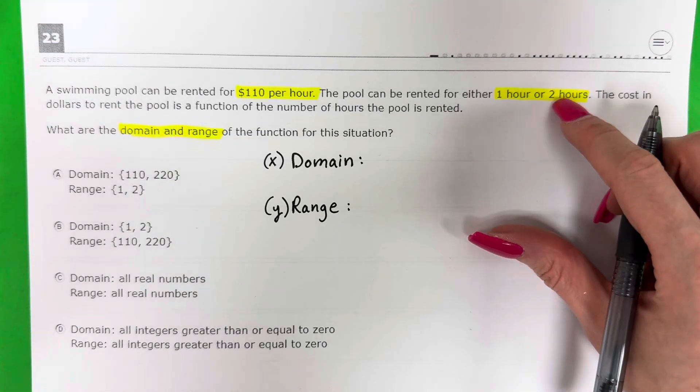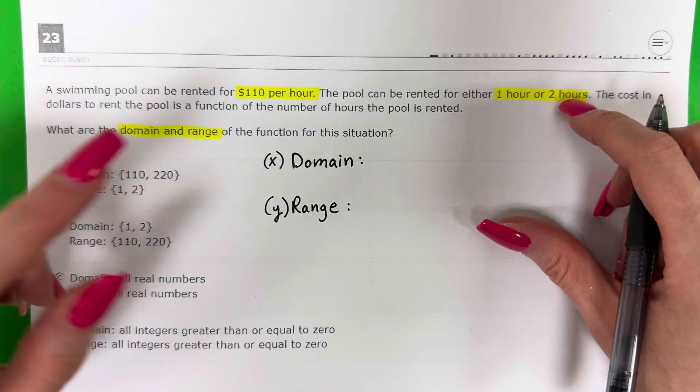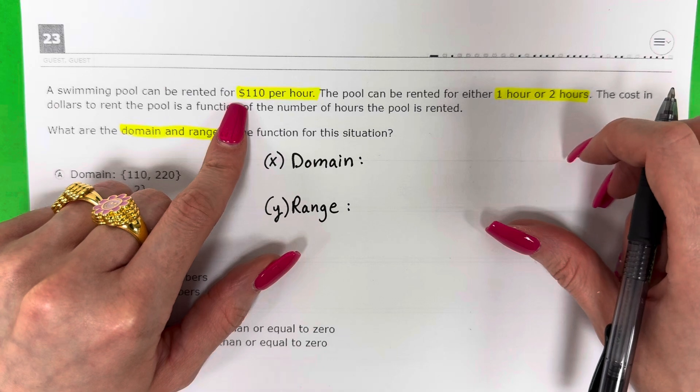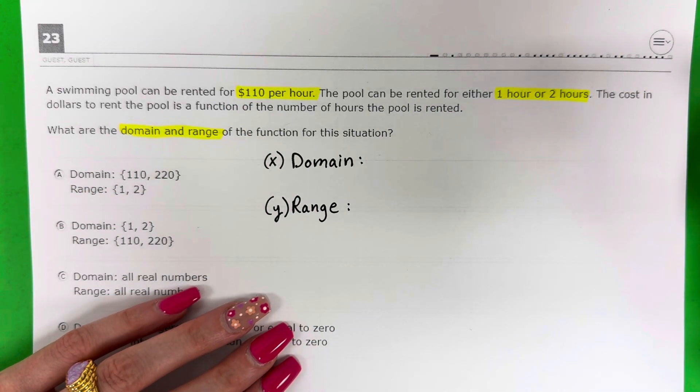This is one hour, right? Two hours. So obviously hours. And this has 110 and it's dollars. So I have dollars and hours.